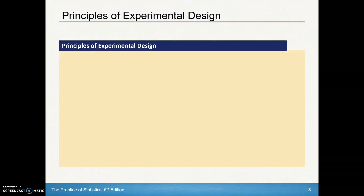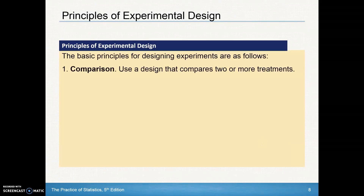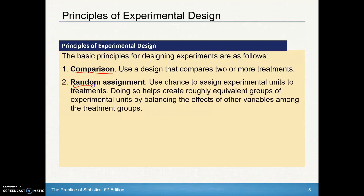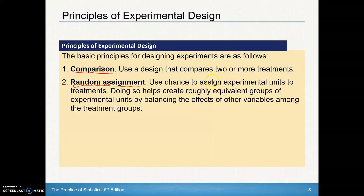Here are the basic principles of experimental design — there are four parts. Number one, you must have comparison, using a design that compares two or more treatments. Number two, you should have random assignment, using chance procedures to assign experimental units to the treatments. This helps create roughly equivalent groups by balancing the effects of other variables among the treatment groups, so each group will have some of those other lurking variables in it.